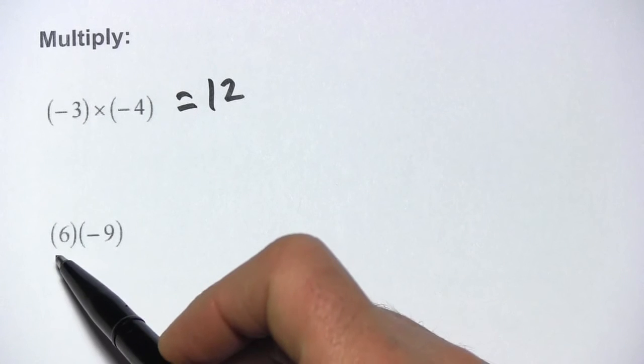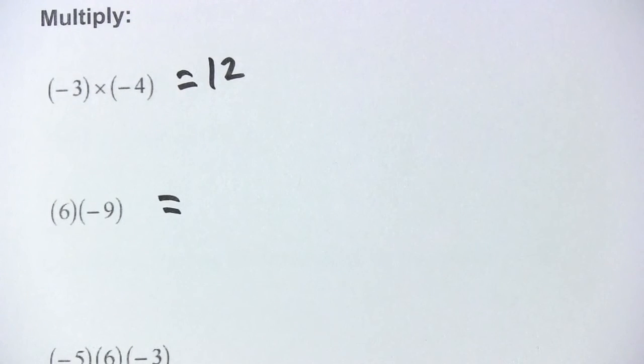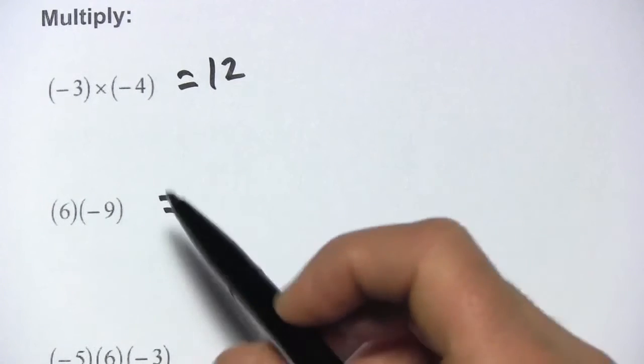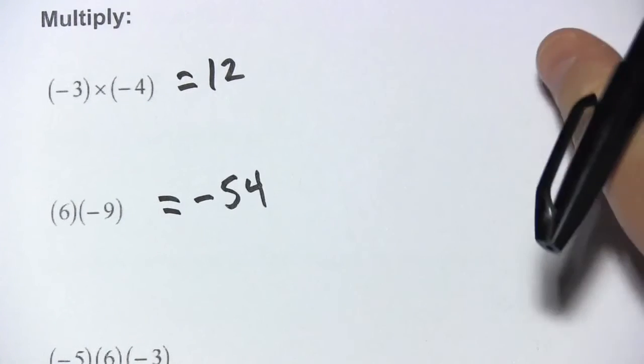Let's look at this next one. We have 6 times a negative 9. Well 6 times 9 is 54 and we just have one negative sign, that's an odd number, so it's going to be a negative answer, so negative 54.